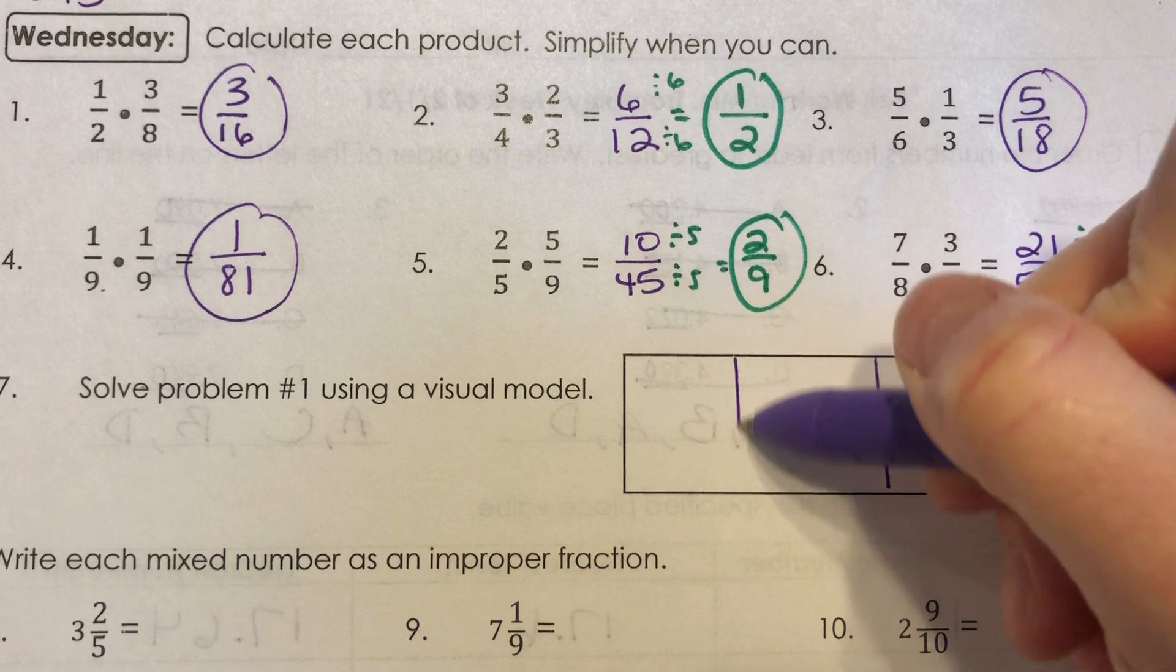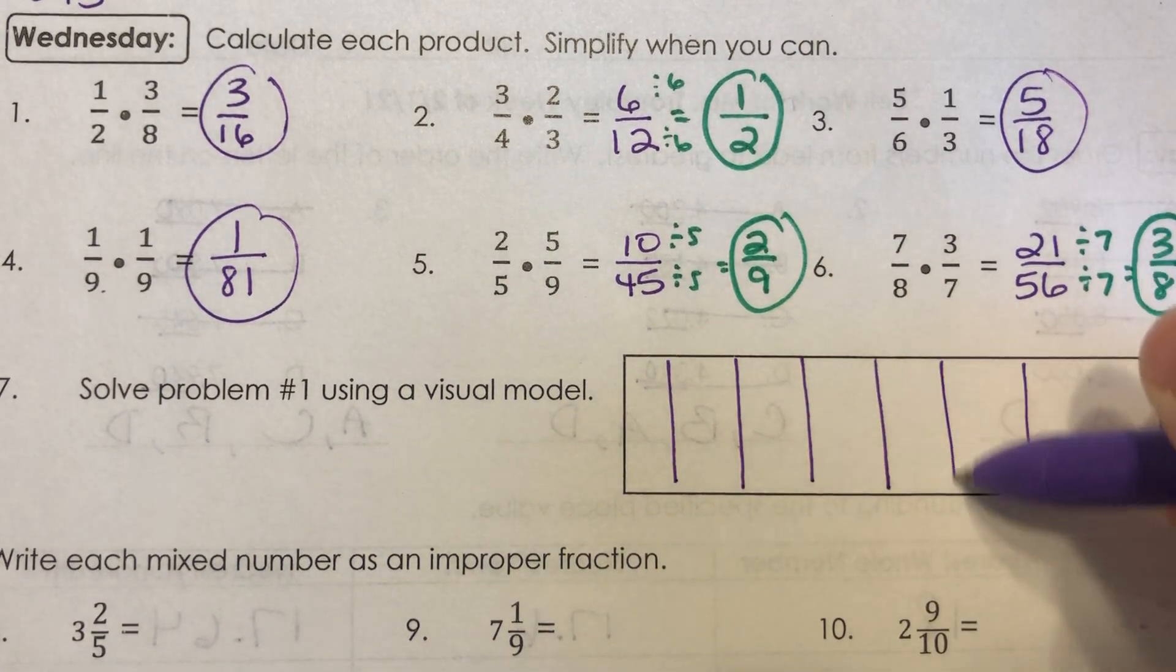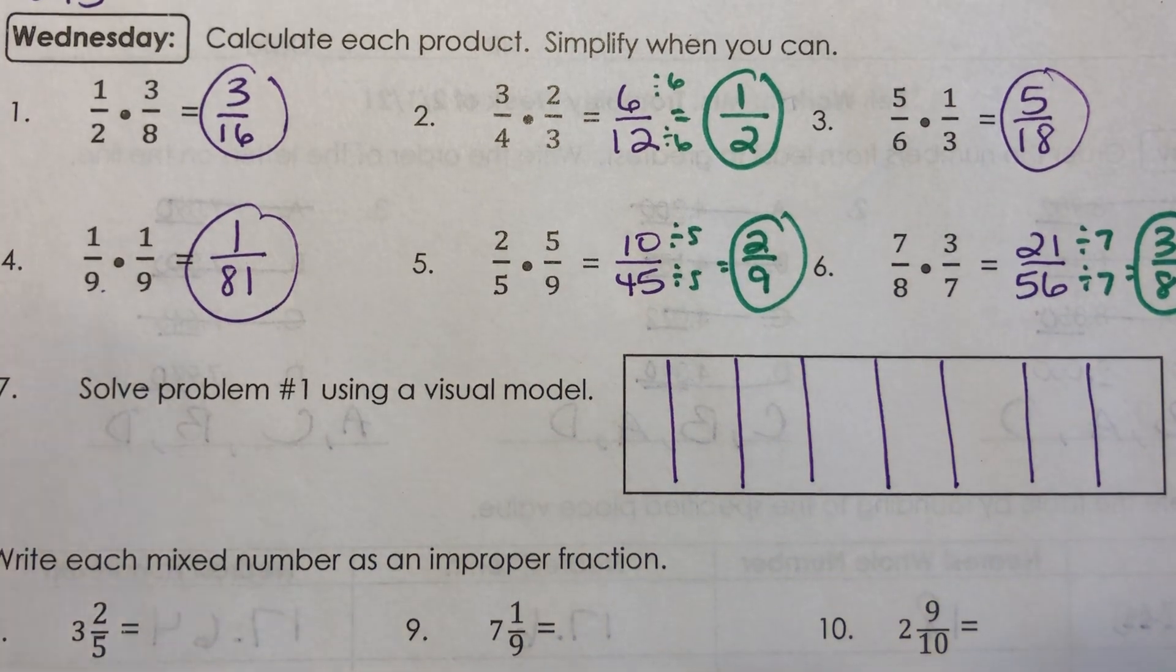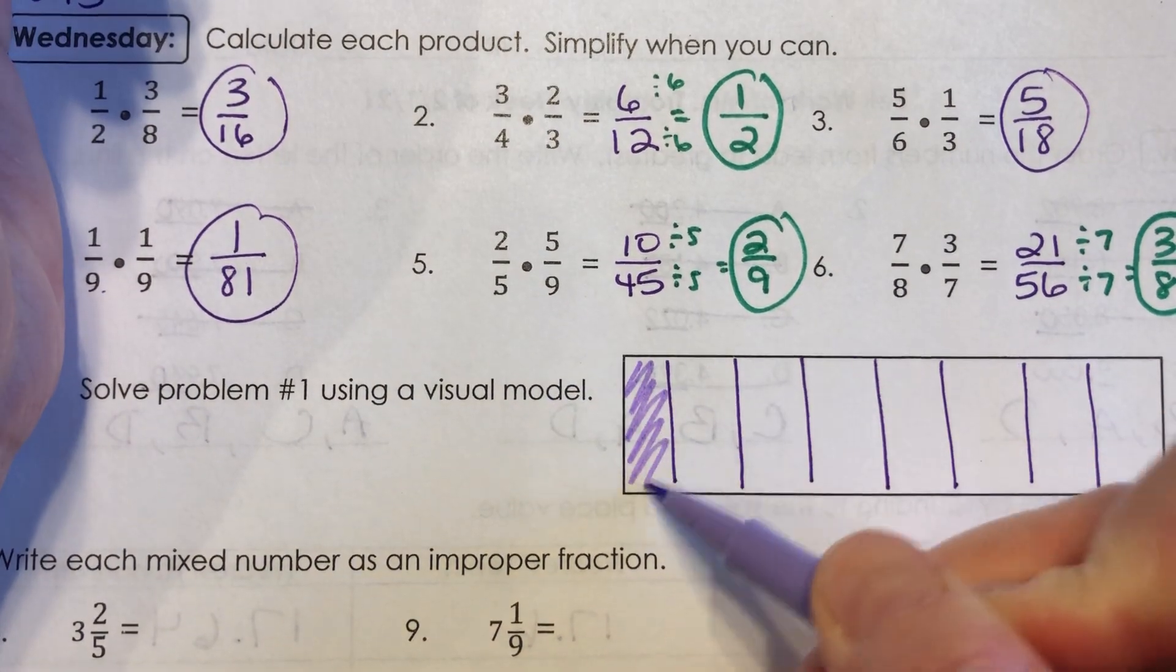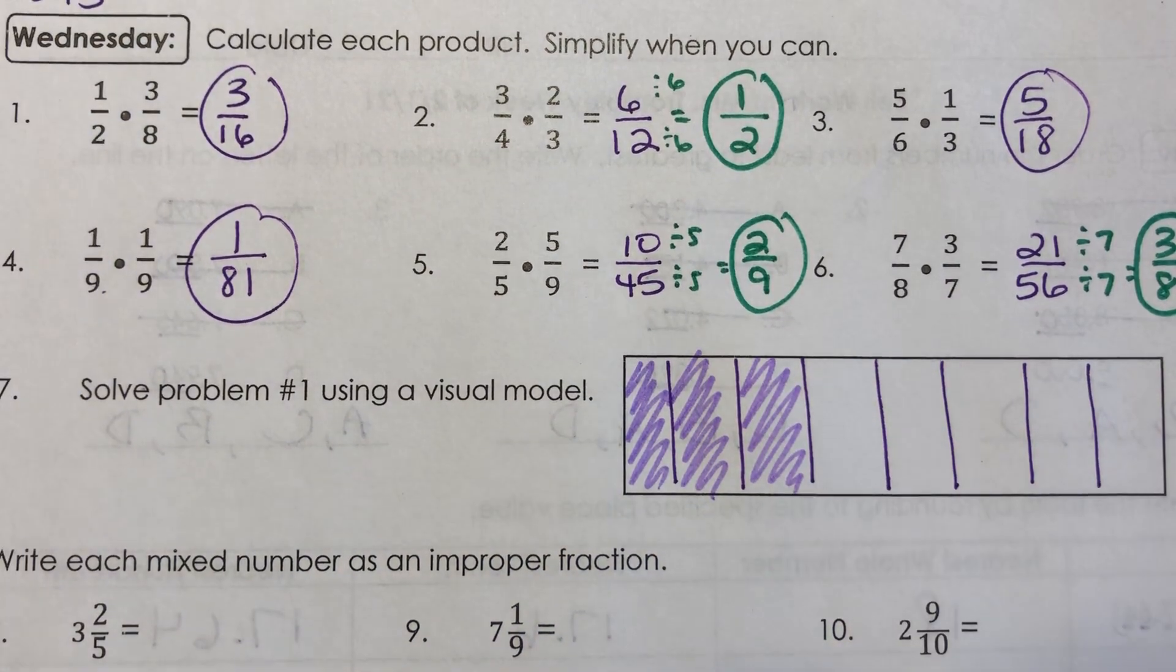So there's 4 on that side, 4 on that side, and I want 3 eighths. So 1, 2, and 3. Okay.